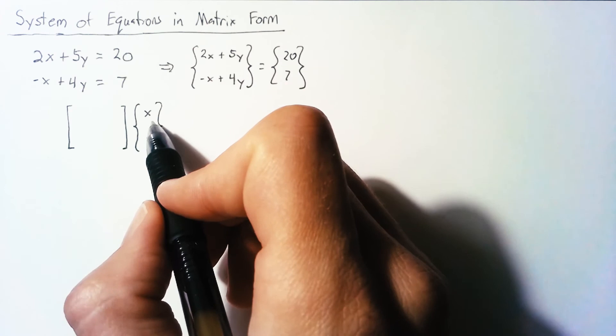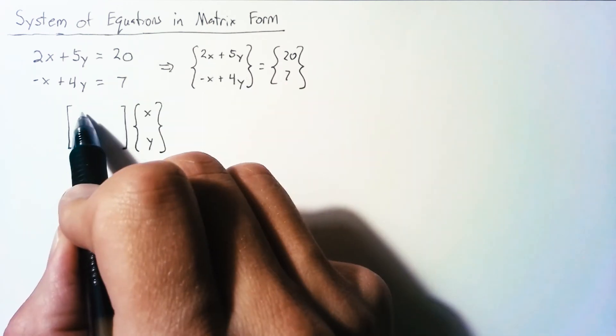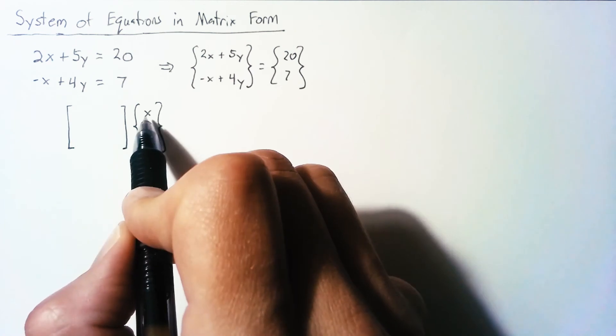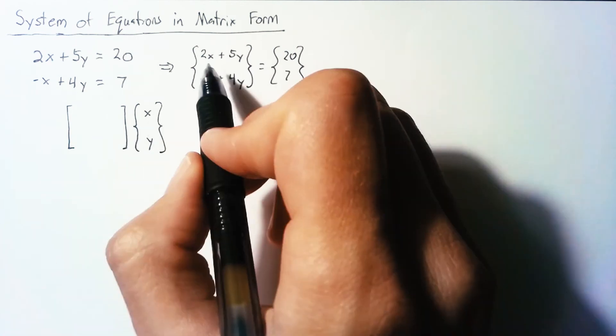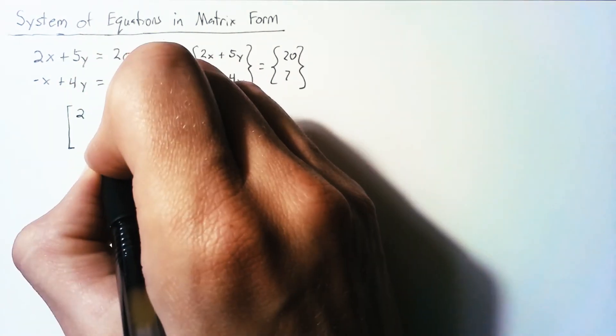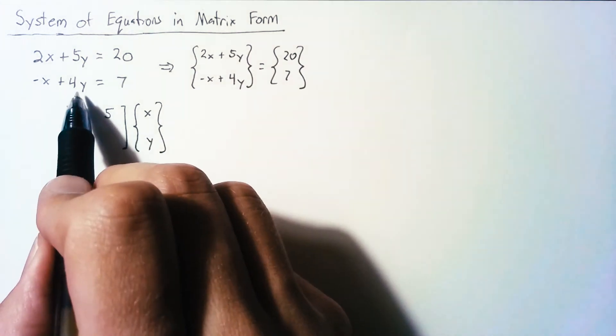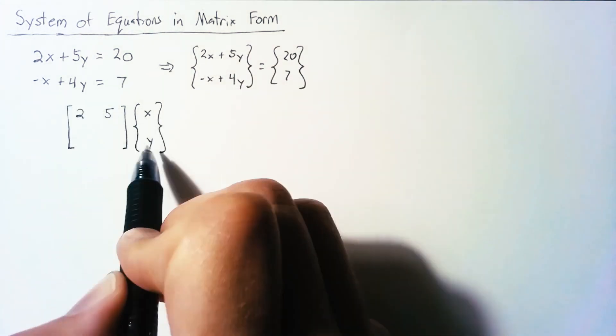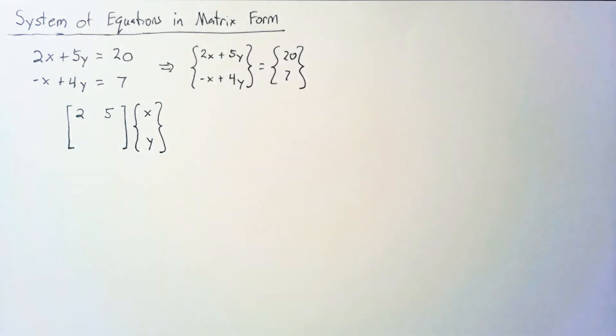Matrix multiplication says that this element of our vector is going to be equal to this element multiplied by x plus this element multiplied by y. Really, all we need to do is put the x value here and the y value here. And it helps to think of the first column as the x column and the second column as the y column. And each row will be its own separate equation.